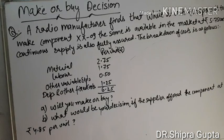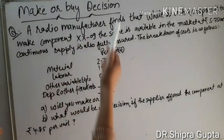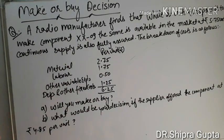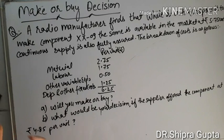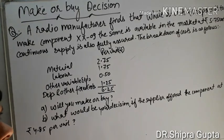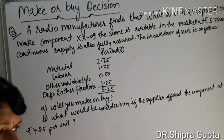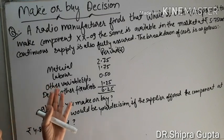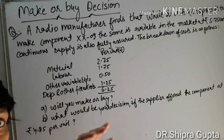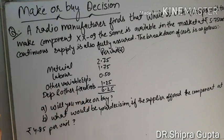The next application or use of marginal costing is the make-or-buy decision. In this application, to make a product we need many components, and we assemble all the items in that product. Some components we want to manufacture ourselves and some we want to purchase from outside. So in this decision, we decide whether to make a particular component or buy it from outside.